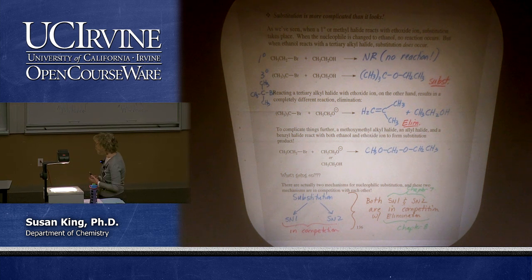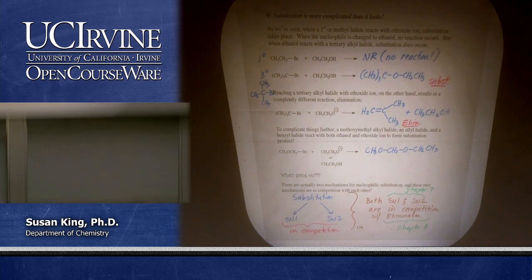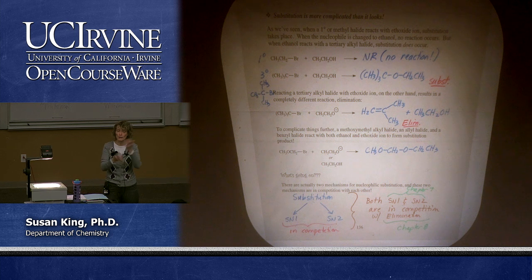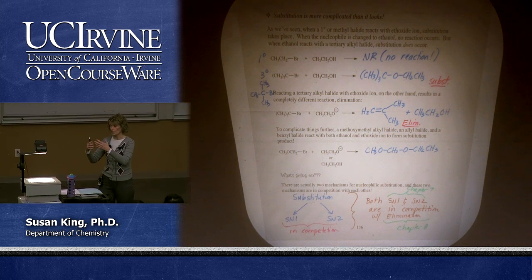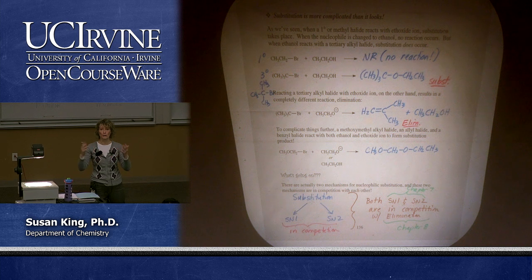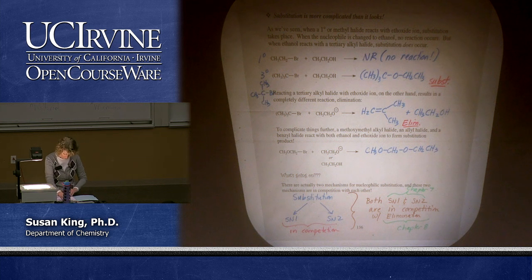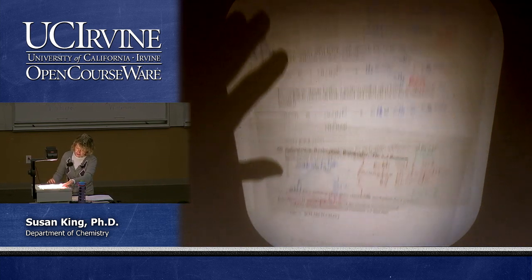I follow a different order than the book. What I do is talk about SN2 — everything you ever wanted to know about SN2 — and then I go and talk about SN1 — everything you ever wanted to know about SN1 — and then at the end of the chapter we compare the two to see what we have going on. So I'm going to start with SN2.